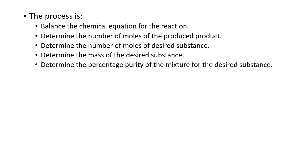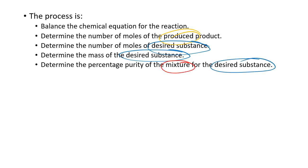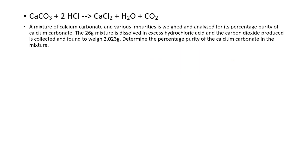So the process is: first, balance the chemical equation; then work out the moles of the product produced; then work out the number of moles of the desired substance; then work out the mass of the desired substance; then get the percentage purity from the mixture for the desired substance.